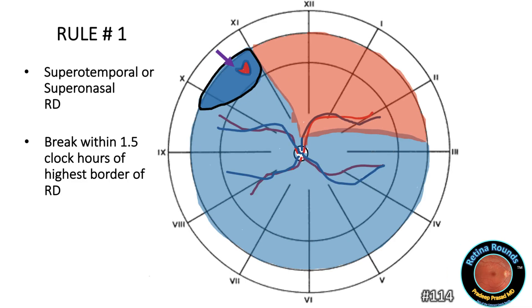Here's another example — a supra-nasal retinal detachment in the patient's left eye. The fluid border is higher nasally than temporally, so we would expect the break to be within one and a half clock hours of the superior border on the nasal side.